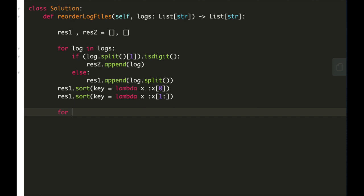To convert the list back to the string we will use join extension to combine res1 and res2.